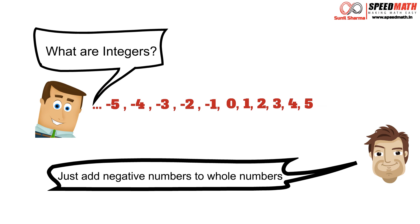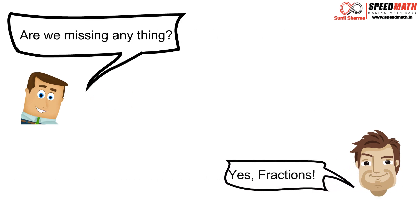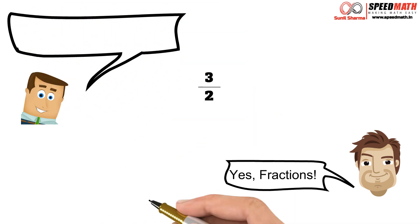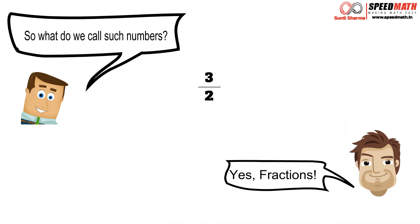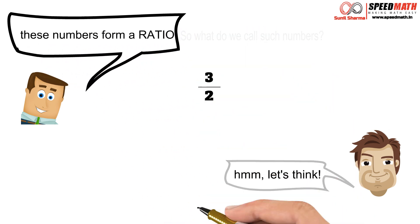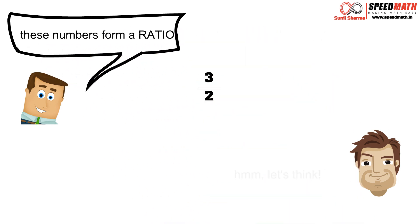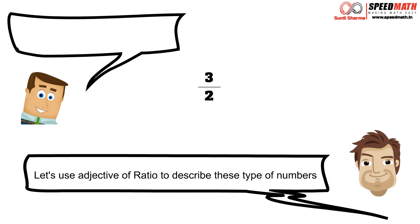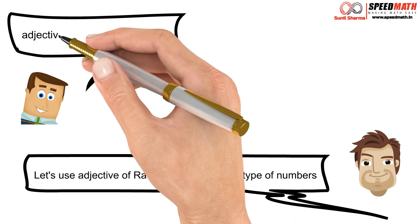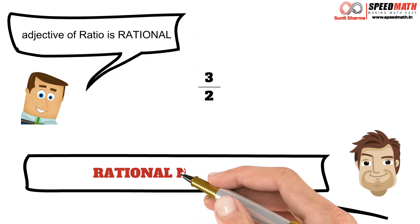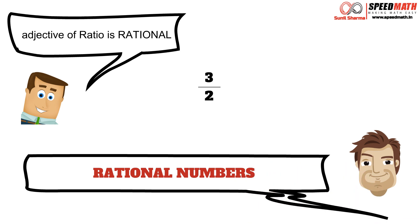Mr. Logic asks: are we missing anything? Mr. Math says: yes, definitely we are missing fractions — look at the example 3/2. Mr. Logic asks: what do we call such numbers? Mr. Math says: let's think — these numbers are in the form of a ratio, so let's use the adjective of ratio to describe them. The adjective of ratio is 'rational', so we will call these numbers rational numbers.